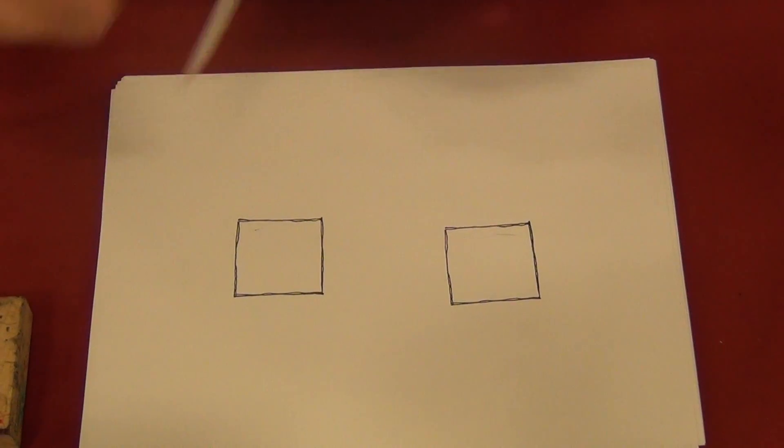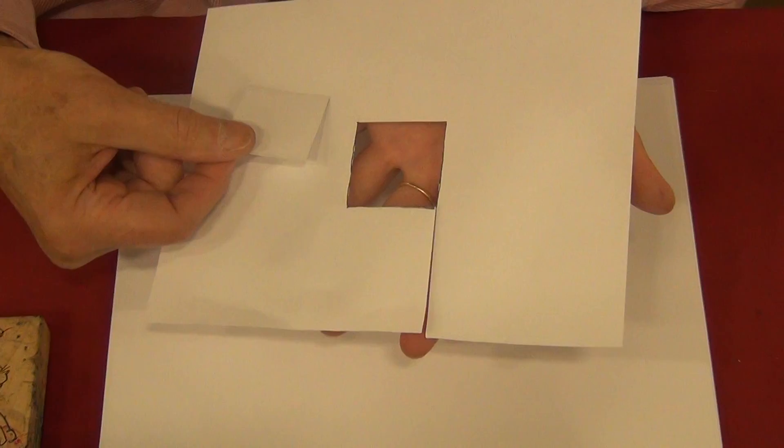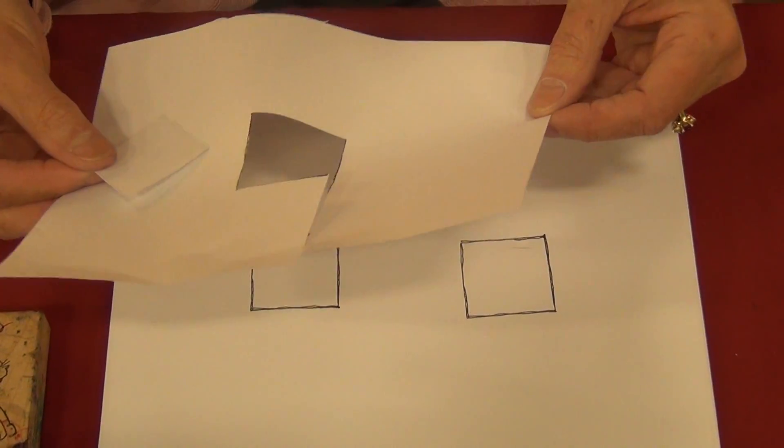Now I took and stamped a square already on this piece of paper and cut it out, and I'm going to use this as a mask.